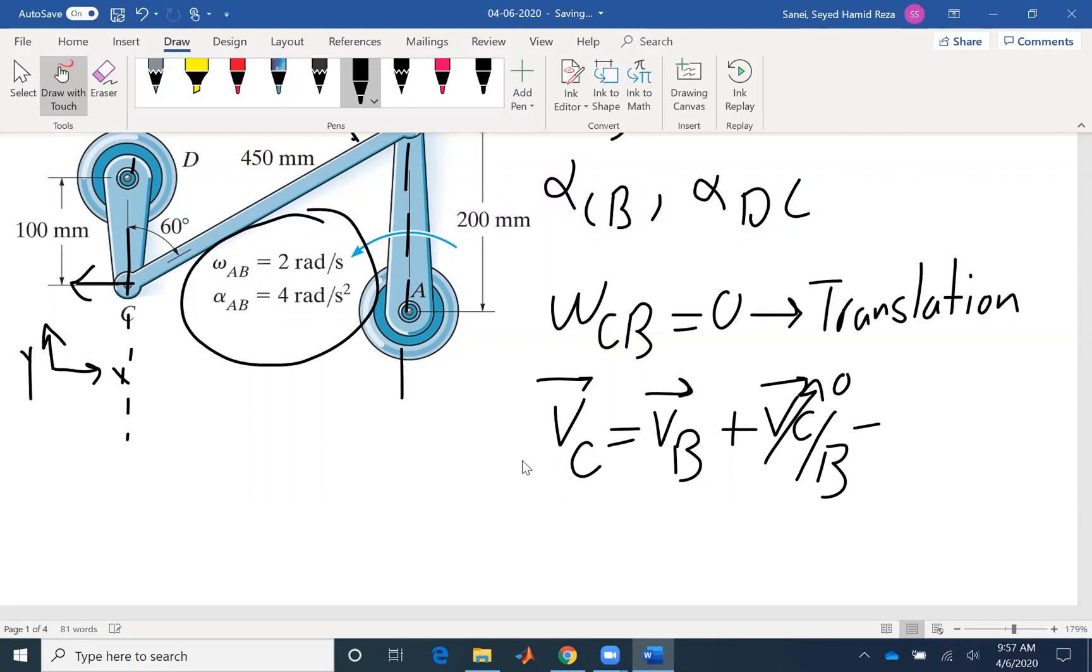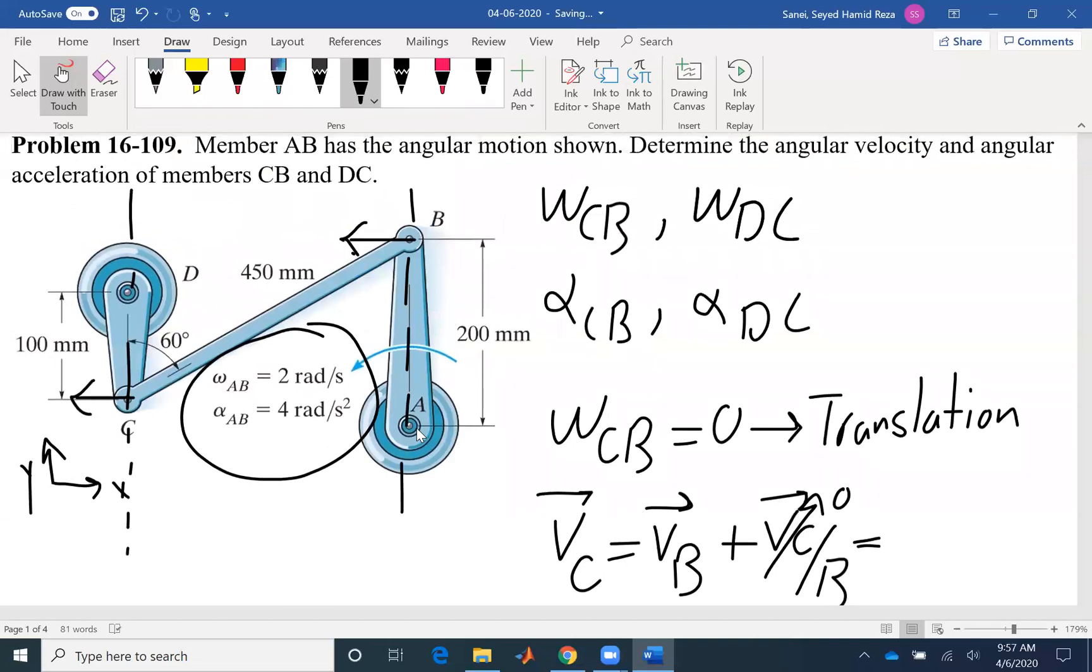So velocity at C equals velocity at B simply because with respect to B the rotational component is zero. Velocity at B is R alpha, 0.2 times omega which is 2. So 0.4 would be the velocity at C.